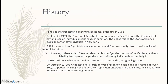Now for some history. Illinois was the first state to decriminalize homosexual acts in 1961. On June 27, 1969, the Stonewall riots broke out in New York City. This was the beginning of gay and lesbian individuals resisting discrimination. The police raided the Stonewall Inn, a popular bar for gay individuals in New York.